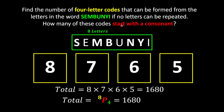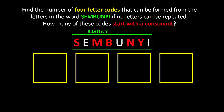Next, they ask how many of these codes must start with a consonant. A consonant is not a vowel — not A, E, I, O, or U. From the word SEMBUNGI, we know S, M, B, N, and G are the consonants, so we have 5 consonants. Since the code must start with a consonant, the first slot now has a condition — it must be one of these 5 letters.